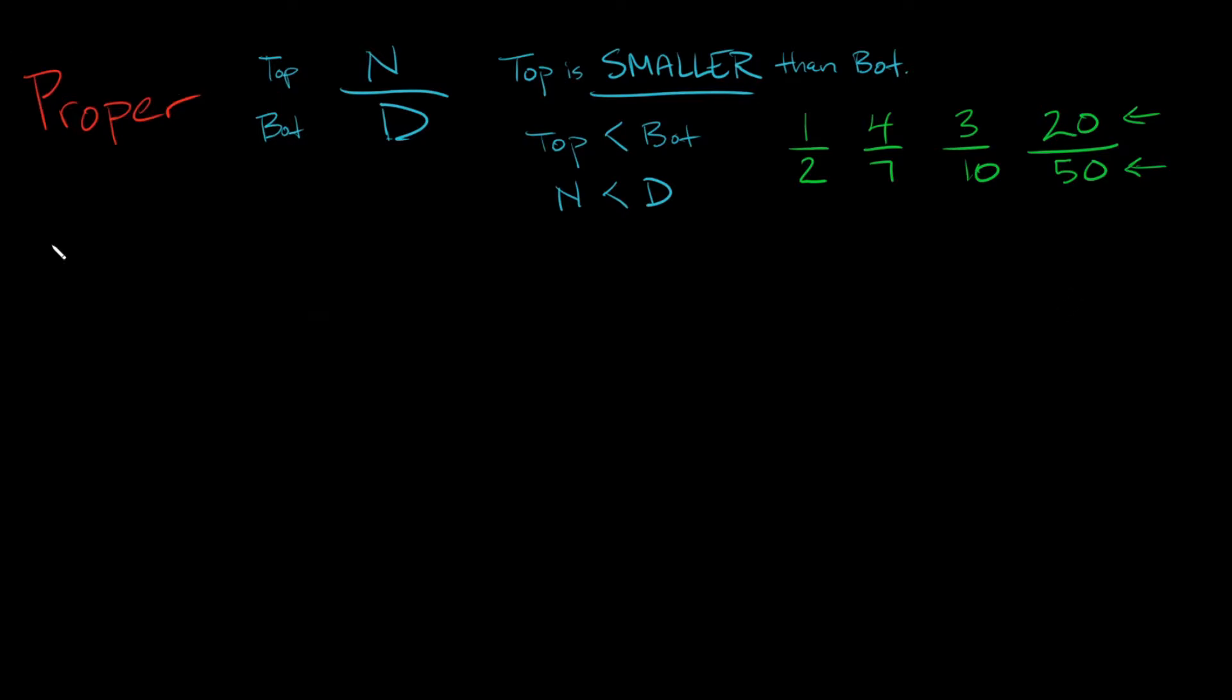And the other kind that we have are called improper fractions. These are literally gonna be the exact opposite of proper fractions. So again, we have a numerator on top, a denominator on bottom. It's just a number over a number. But in this case, the top is bigger. It's bigger than the bottom, or equal to, or equal to.